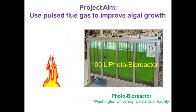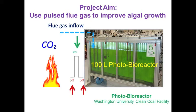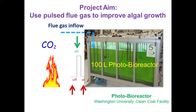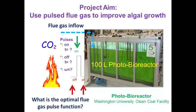Our project aim is to use pulsed flue gas to improve the algal growth. Instead of feeding the algae with flue gas continuously, we use pulsed flue gas to avoid the growth inhibition. In this way, the flue gas and the air are pumped into the reactors alternately. However, we don't know the proper frequency of the on-off time, so we will use Simulink to predict the optimal frequency which will theoretically promote optimal algal growth.